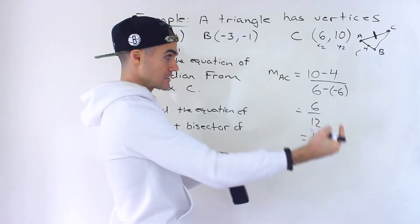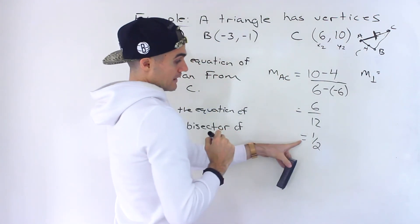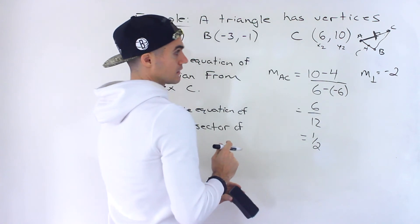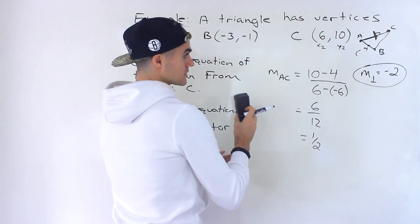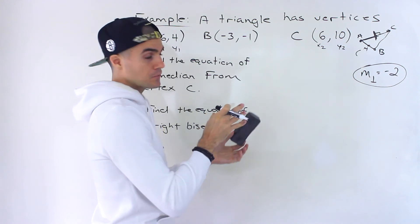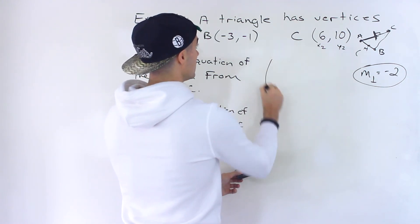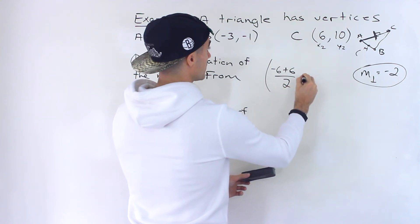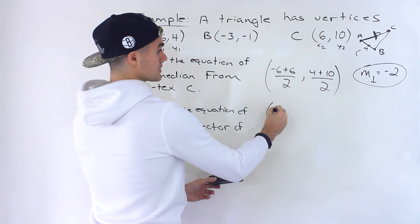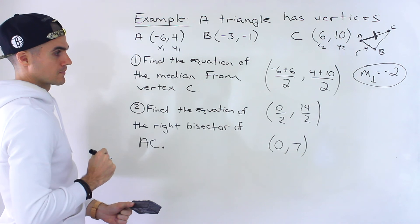Step 2: we need the perpendicular slope, because the right bisector is perpendicular to AC. The negative reciprocal of 1 over 2 is negative 2, so that's going to be the slope of the right bisector. Now we need the midpoint of AC. The x values are negative 6 and 6, which add to 0 divided by 2 — that's 0. The y values are 4 and 10, which add to 14 divided by 2 — that's 7. So the midpoint of AC is 0 and 7.